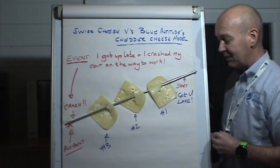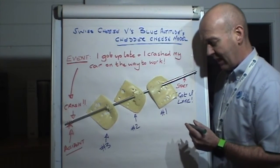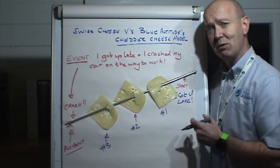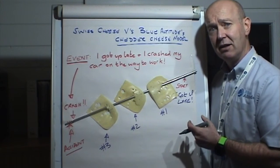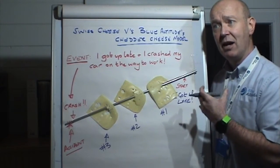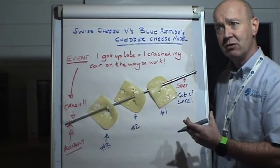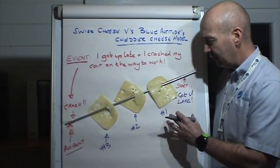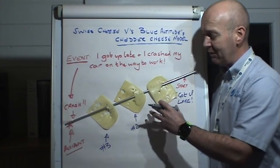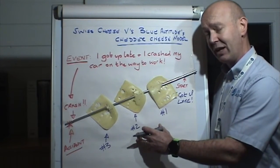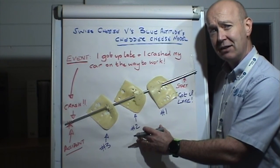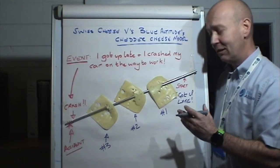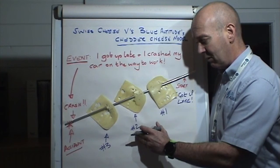Event number one could be related to pressure. For example, if I got up late I'd feel pressure to make up time and get out of the house, so that would affect my normal behavior. Event number two: once I'm in my vehicle driving to work, I'm worried and concerned about being late, so my headspace means I'm now distracted.